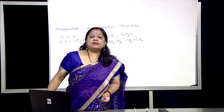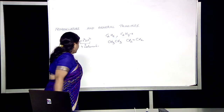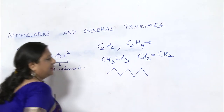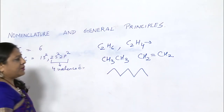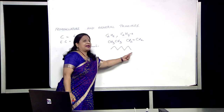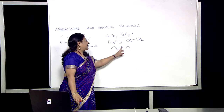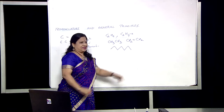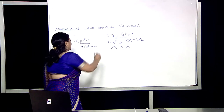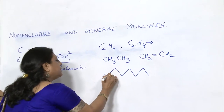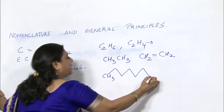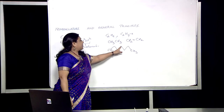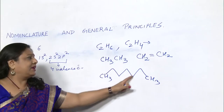Another form is the bond line form, where you represent the molecule in a zig-zag manner. When you represent the molecule in a zig-zag manner, you are not showing any of the atoms — it is just lines. So here you find that the terminal positions are always occupied by CH3, and the peaks are occupied by carbon.